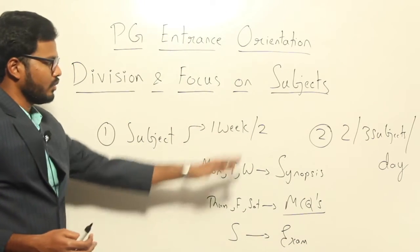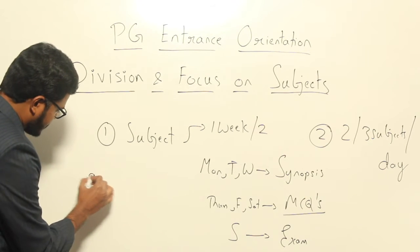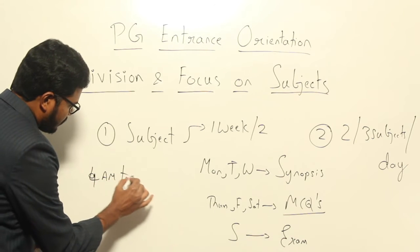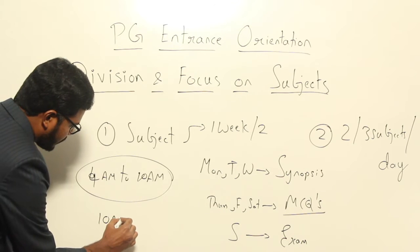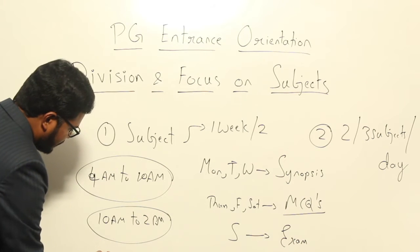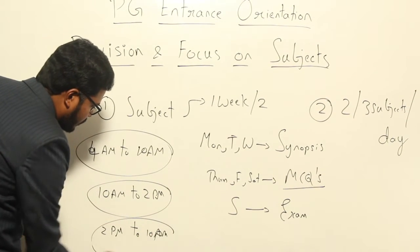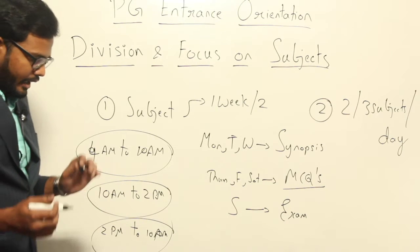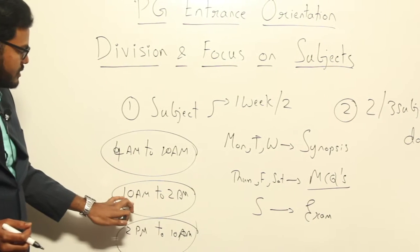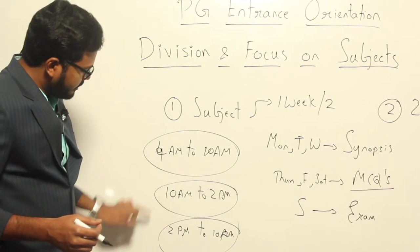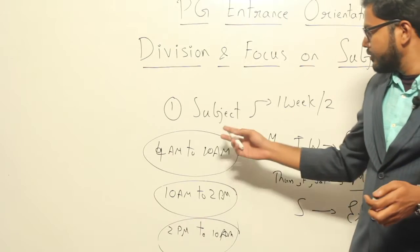Start with a single subject per week or two weeks, and always divide a given day into three sessions — morning, afternoon, and evening. The morning session extends from 4 a.m. to 10 a.m., the afternoon session from 10 a.m. to 2 p.m., and the evening session from 2 p.m. to 9 or 10 p.m. Focus on memory-based topics in the morning session, drawing, flowcharts, diagrams, and notes in the afternoon session, and logic-based questions in the evening session.